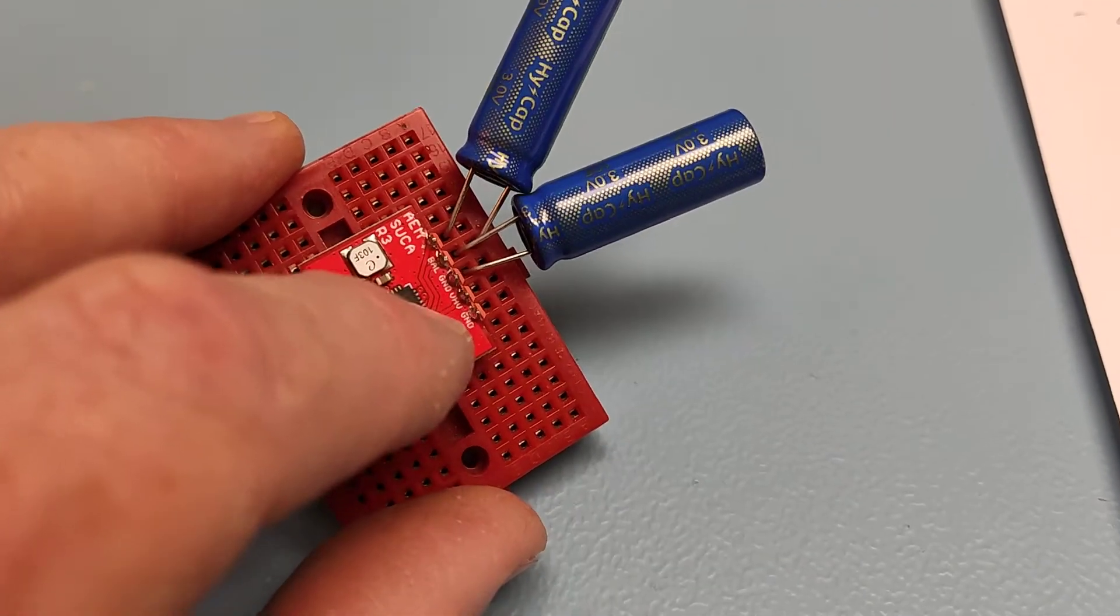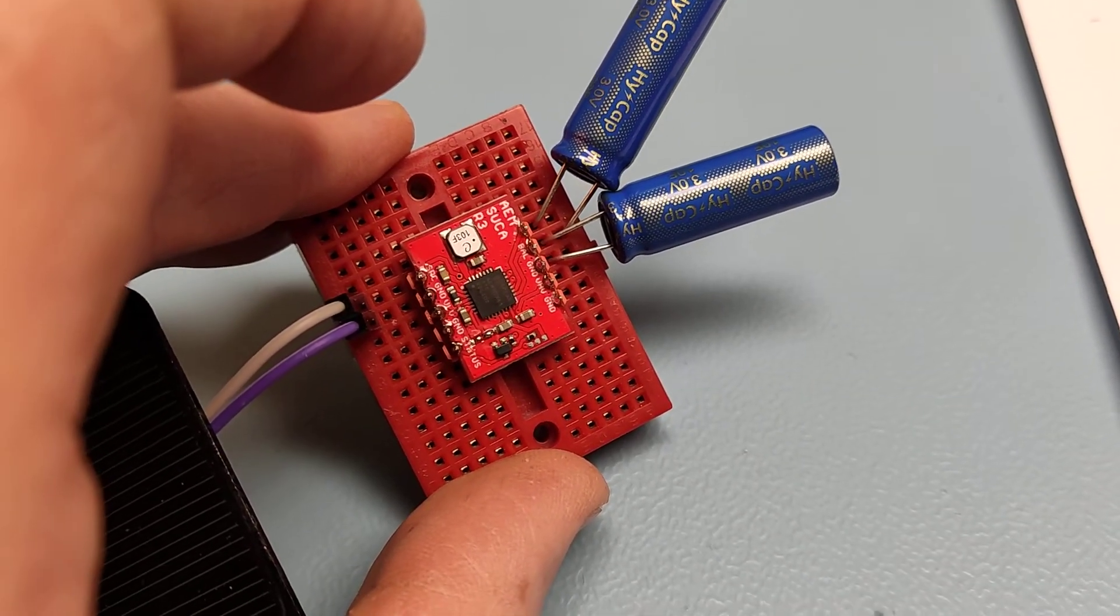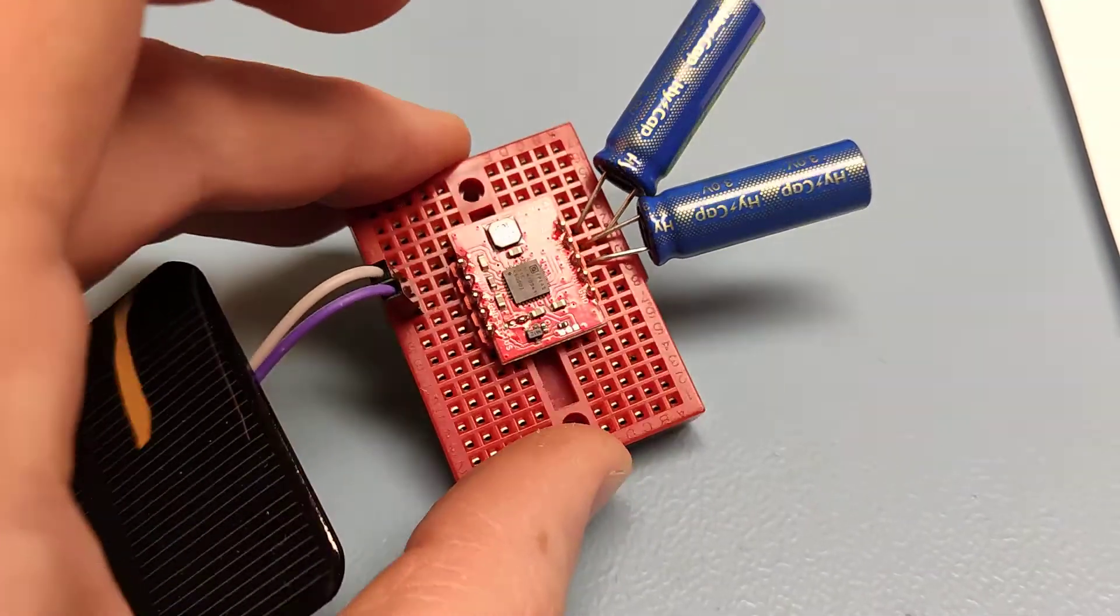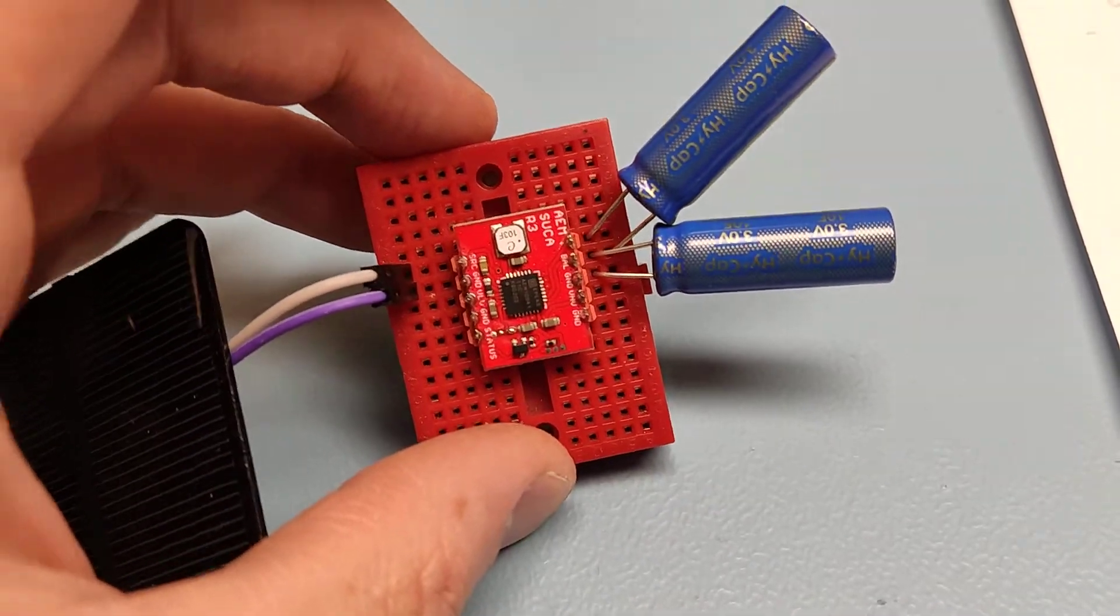It has two regulated output voltages, 3.3V and 1.8V. It is highly efficient and it works even with indoor light.